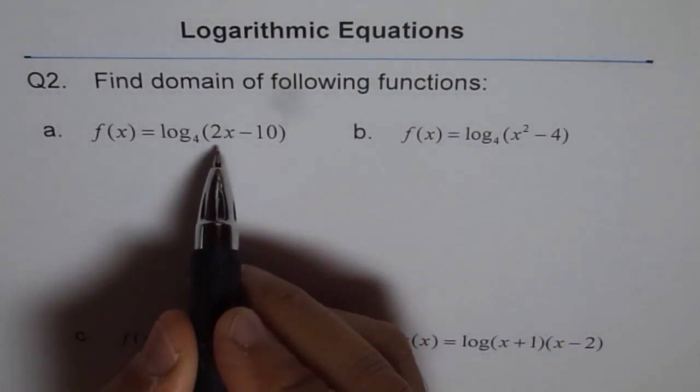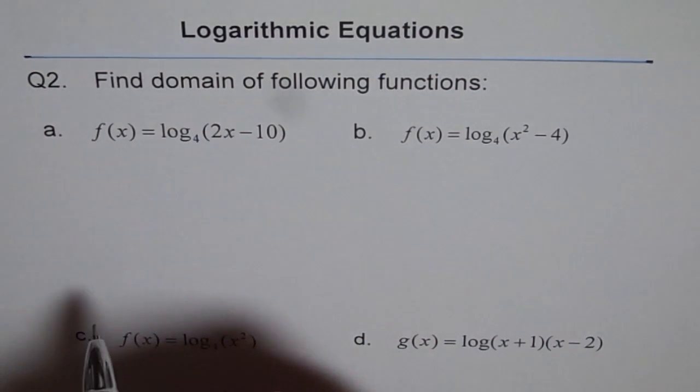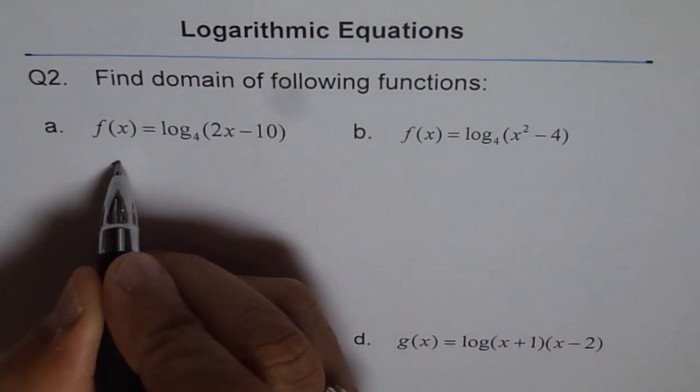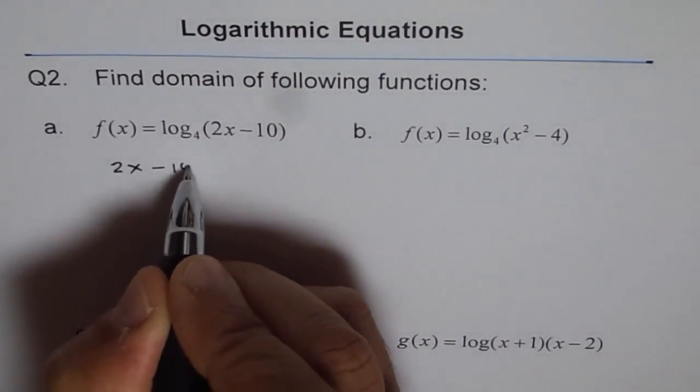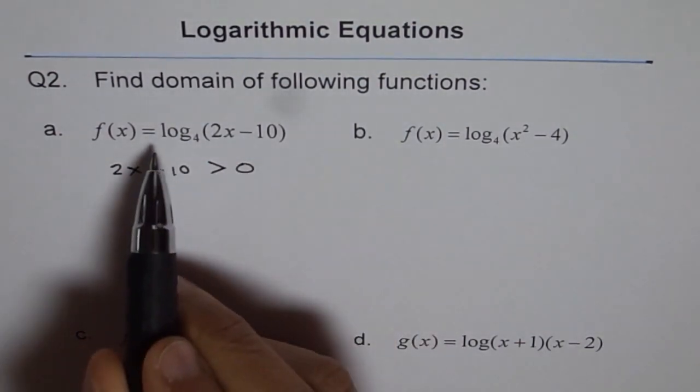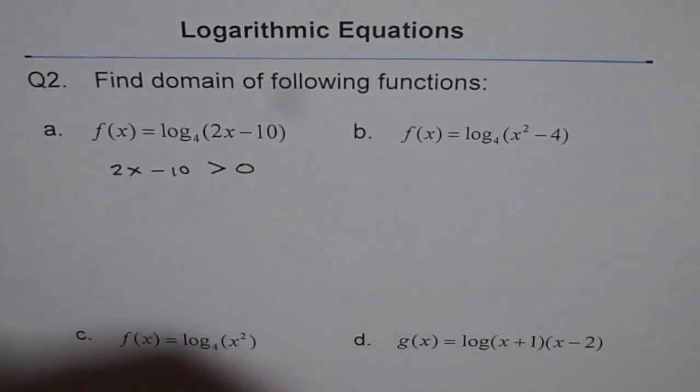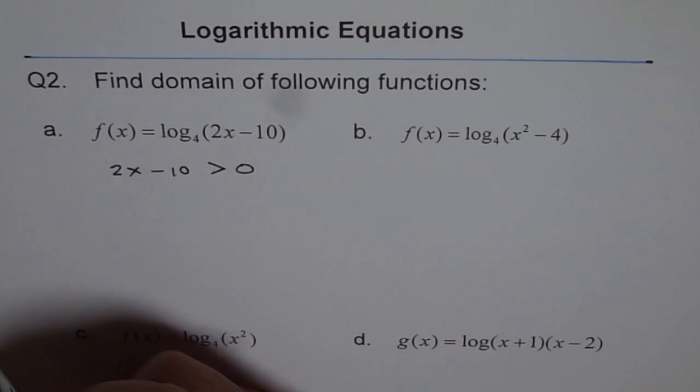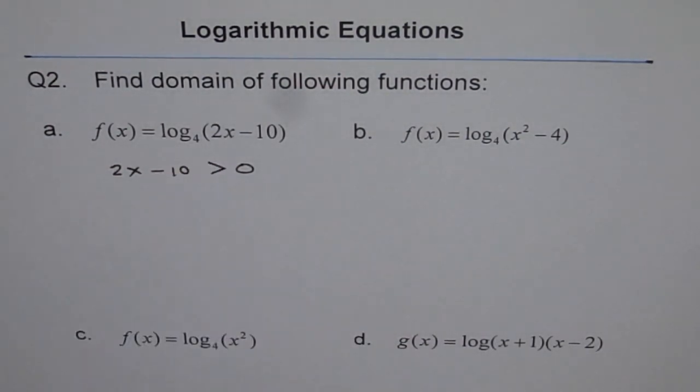Our argument 2x - 10 should be positive. That is to say that 2x - 10 should be always greater than 0 for log₄ to be a valid function, since log is not defined for negative numbers or even 0.